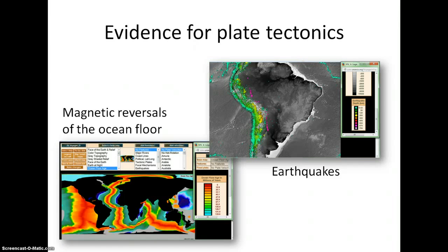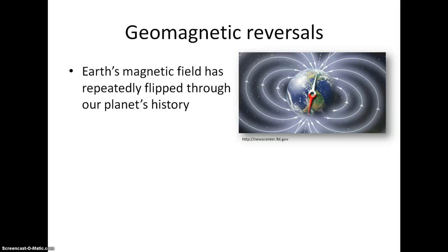In this lab, you will be using the Jules Verne Voyager website to look at pieces of evidence. I am going to give you some tips for using the Jules Verne Voyager site, but first let's look a little more closely at what is going on with these pretty rainbow-colored maps that show seafloor age. Scientists have various lines of evidence that the geomagnetic field of our Earth has reversed polarity repeatedly through the Earth's history.